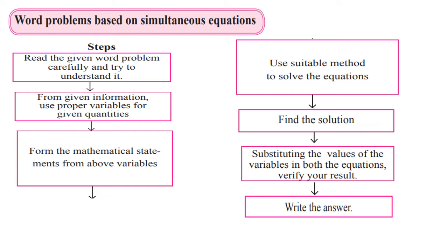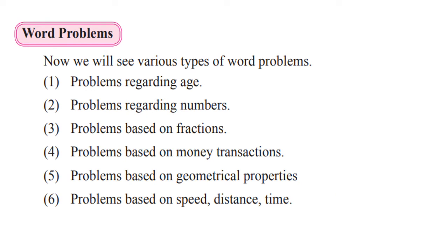Now which type of word problems will come? We have various types: problems regarding age — age of father and son or mother and daughter. Then problems regarding numbers — 2-digit, 3-digit, or natural numbers. Then problems based on fractions, where conditions about numerator and denominator are given and we find the fraction. Then problems based on money transactions, problems based on geometrical properties using formulas from mensuration, and problems based on speed, time and distance. Now let us start solving practice set 5.2.